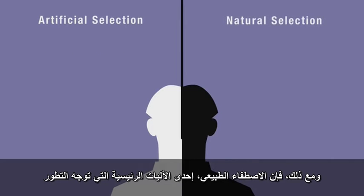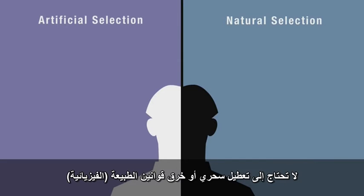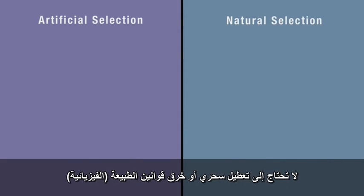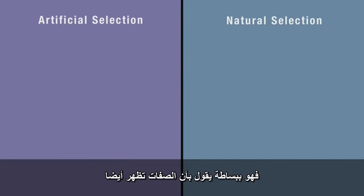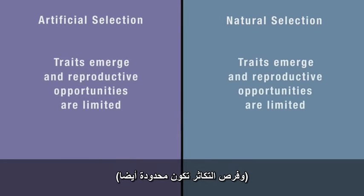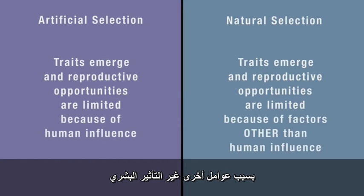And yet natural selection, one of the major mechanisms that drives evolution, requires no magical suspension or violation of physical laws. It simply says that traits also emerge, and reproductive opportunities are also limited because of factors other than human influence.